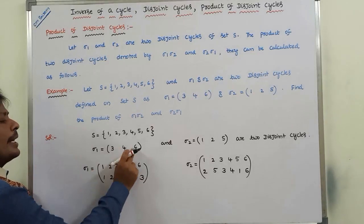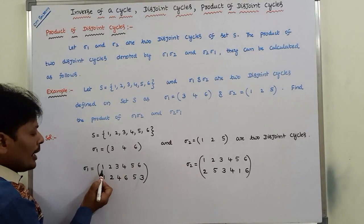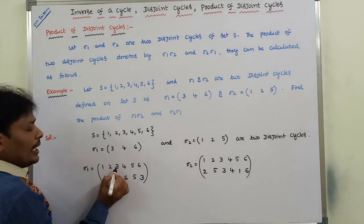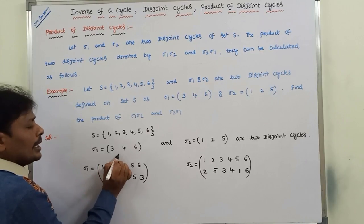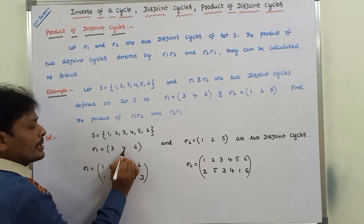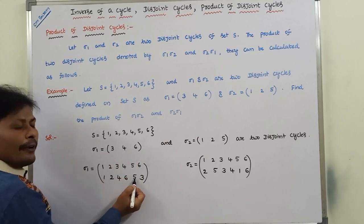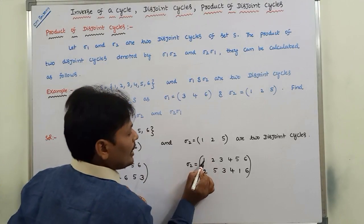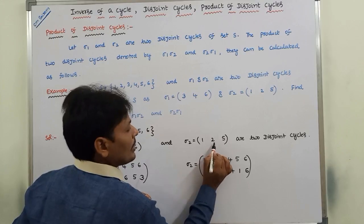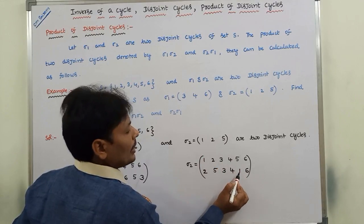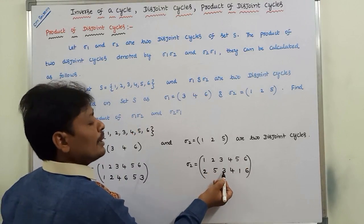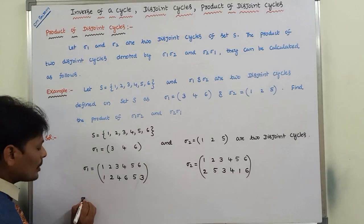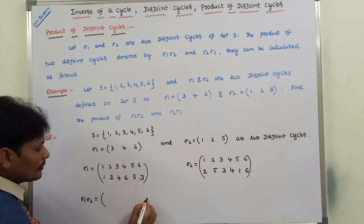Now we are finding out σ1∘σ2. Write all elements of set S in the first row: 1, 2, 3, 4, 5, 6. Note that elements with the same image in σ1 (like 1→1, 2→2, 5→5) are still carried through to σ2. For each element, first apply σ1, then take that result as input to σ2.